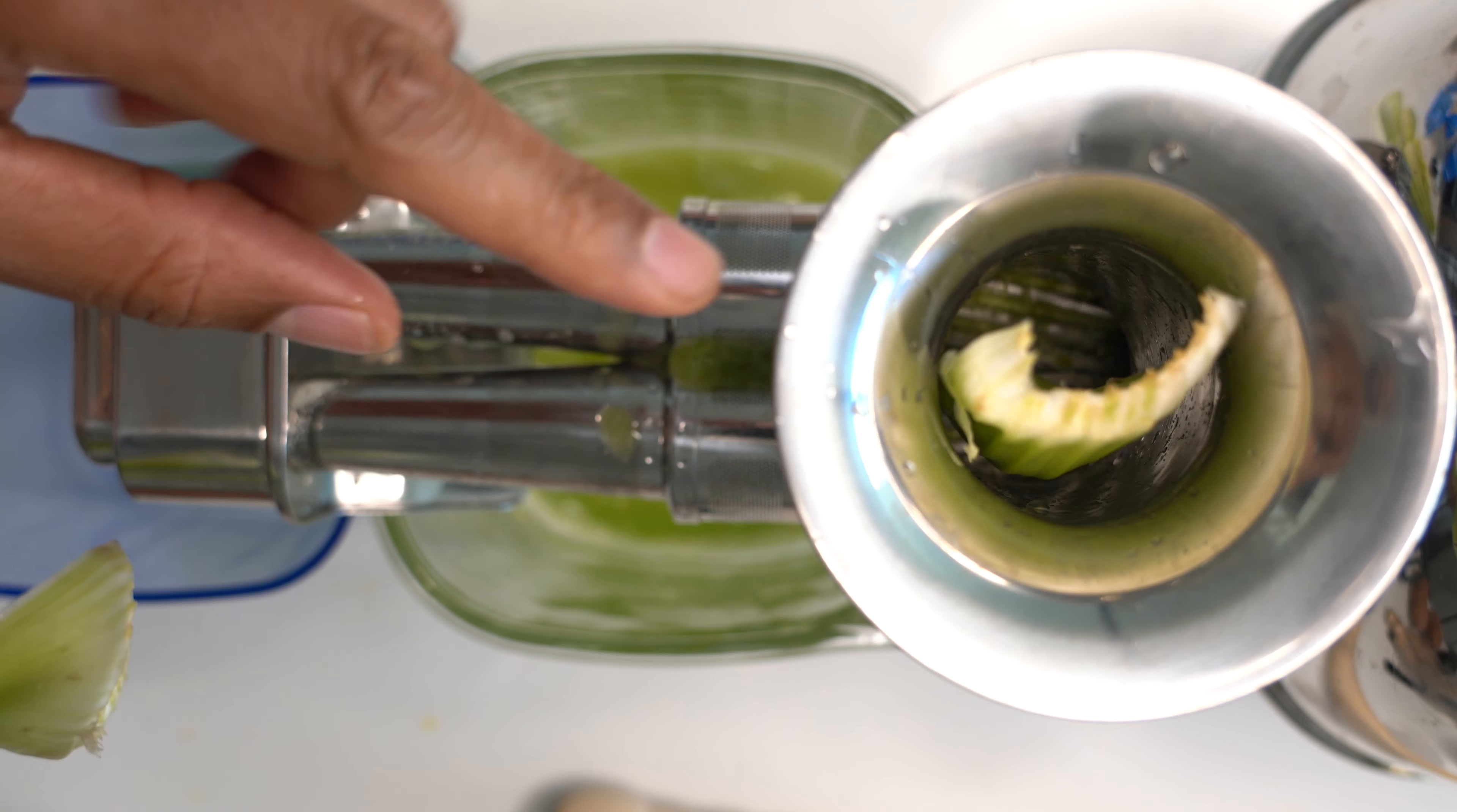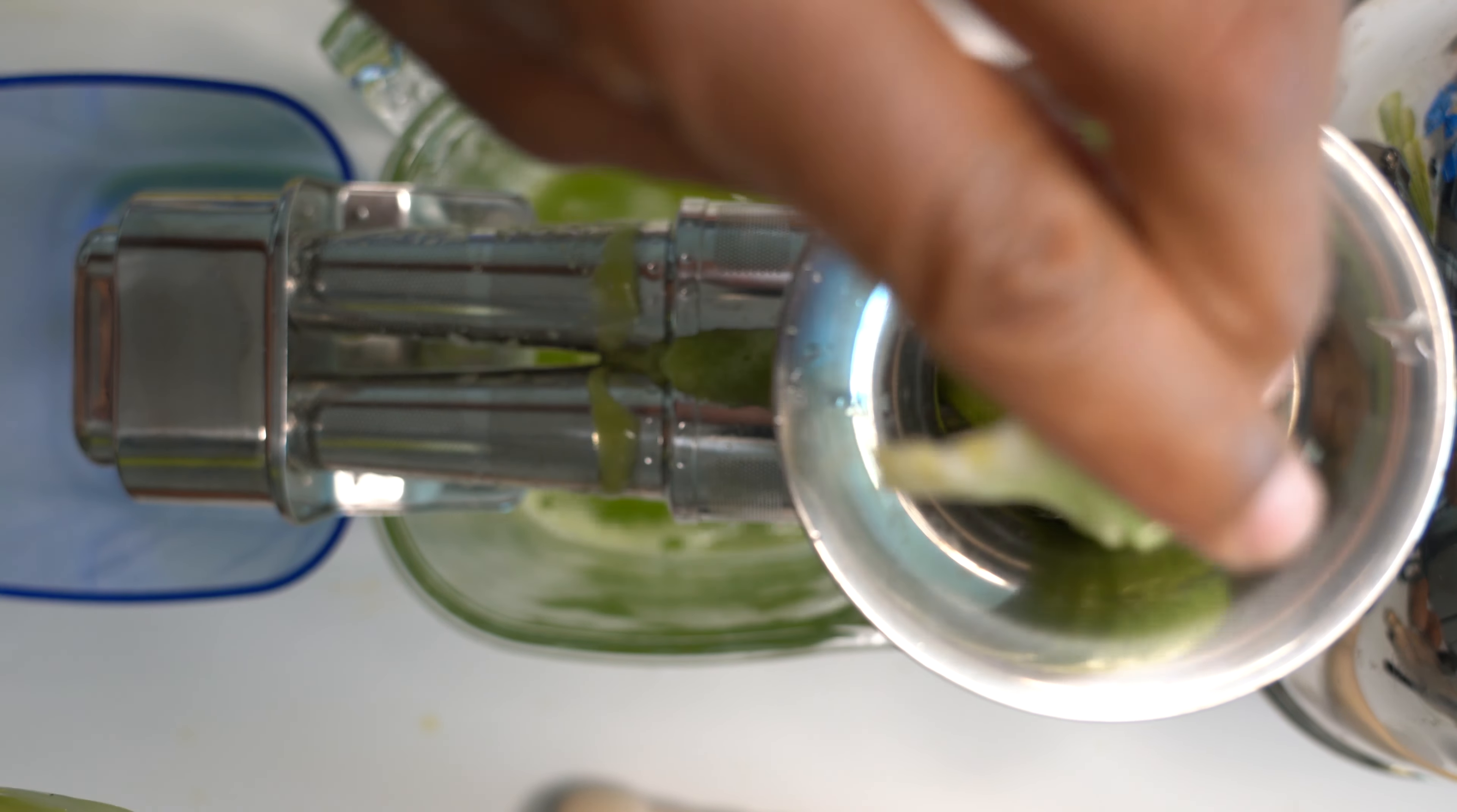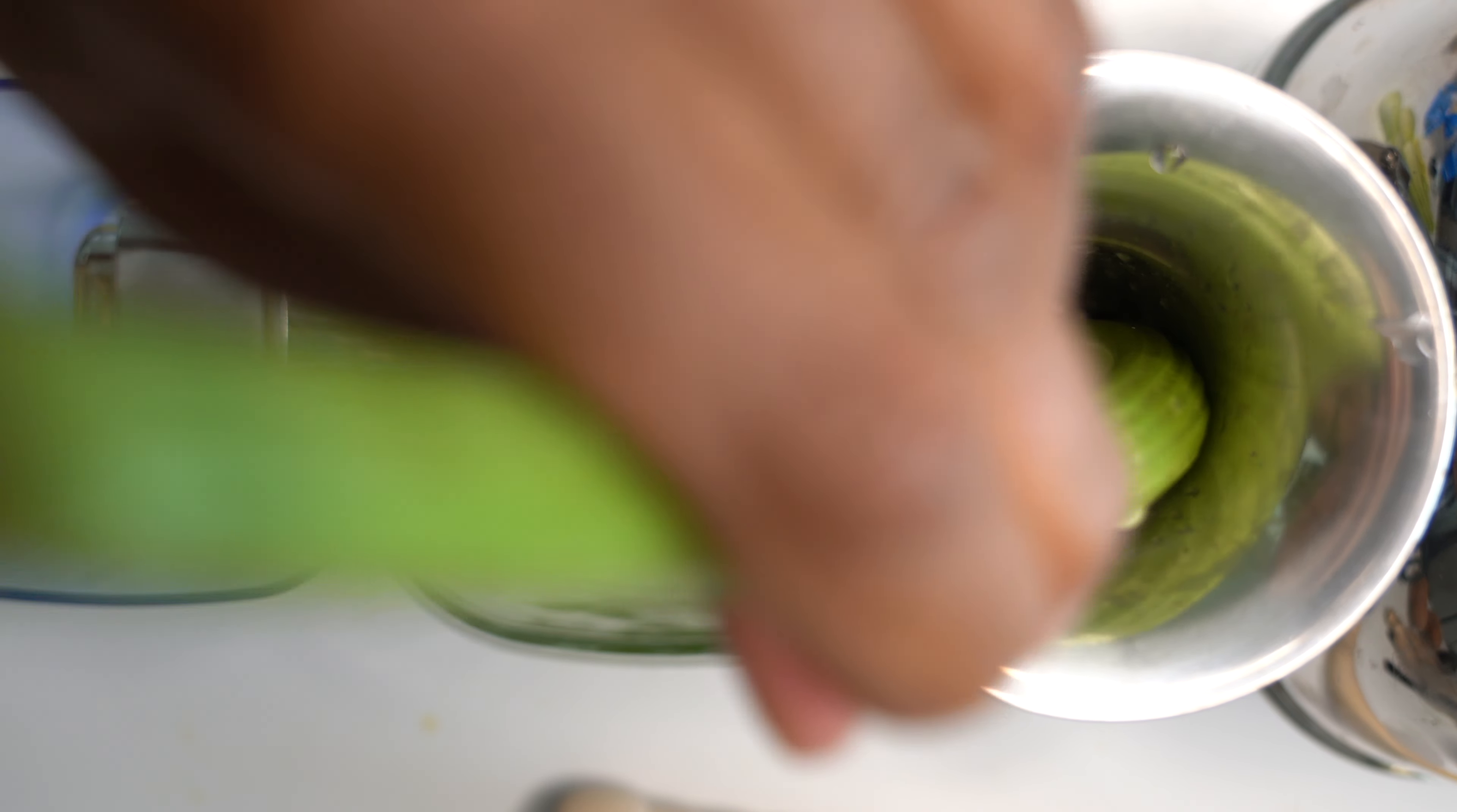You can see the celery juice coming out from the sides right here. Now I don't always have to use the plunger right away. I can actually use the next piece of celery to push down the celery that's already in there.